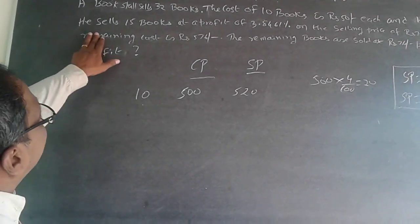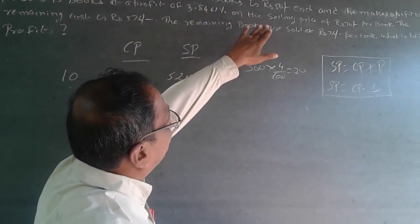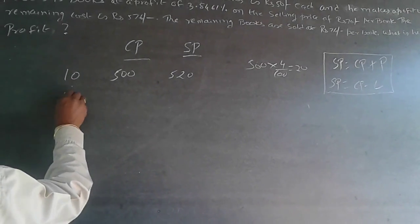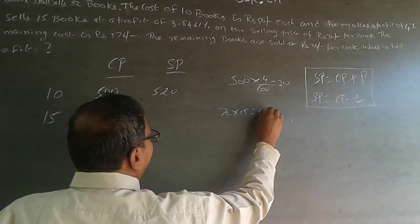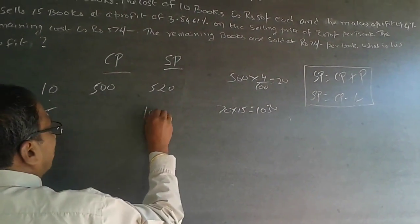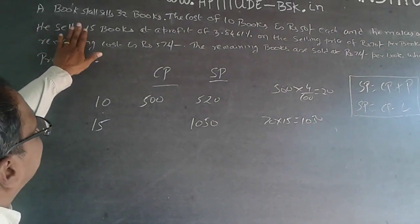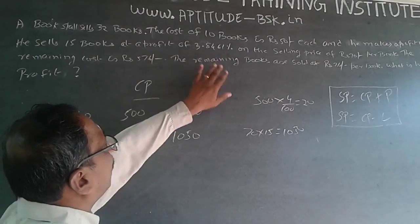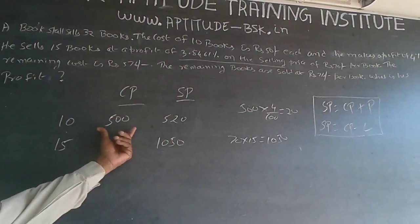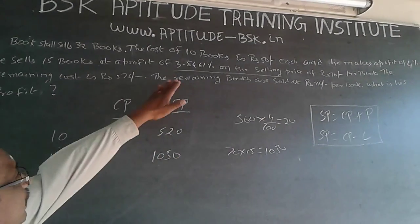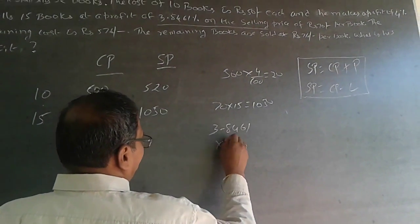For the next 15 books, he is making a profit of 3.8461 percent on the selling price of Rs. 70 per book. Since the selling price is Rs. 70 per book, 15 × 70 = Rs. 1050. The selling price is Rs. 1050, and it is specifically mentioned that the profit percentage is on the selling price.